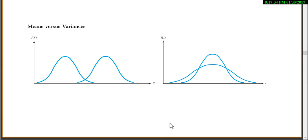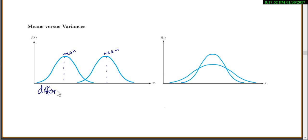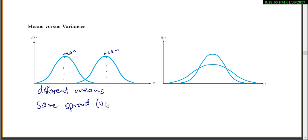To understand what we mean about spread, here are two different examples. In the first example, the two graphs seem to have the same shape but they're shifted. One mean is here, and the other mean is here — they have different means. One is shifted up quite a bit, so they have different means or averages. But notice the shape is the same — they're spread out the same — so they have the same variance.